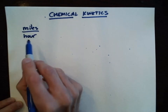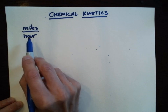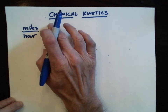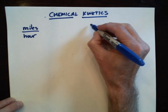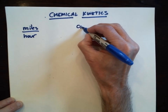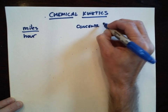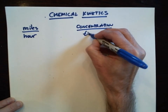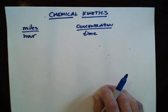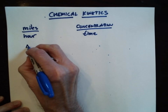For chemical reactions, what we usually use to measure how fast a reaction is going is similar — it's something divided by time. In this case, we take a concentration and divide it by time. The particular concentration most often used in chemical kinetics is the unit of molarity.